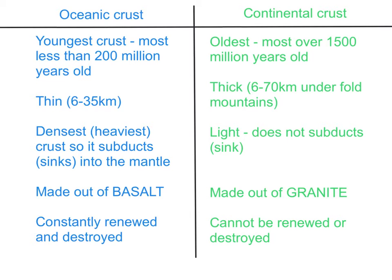Oceanic crust has a thickness of 6 to 35 kilometers. This is thinner than continental crust, which has an average thickness of 6 to 70 kilometers, with the 70 kilometers being found under fold mountains such as the Himalayas.